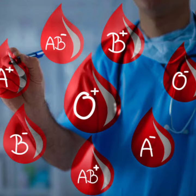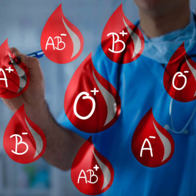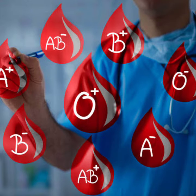Eye color is also a discontinuous variation. Eye colors are specific — like hazel, brown, grey, or black. There are no in-between colors like purple or red; these are the natural, specific colors. Similarly, hair color is also a type of discontinuous variation. These are limited, distinct categories, and that is why we call them discontinuous variations.